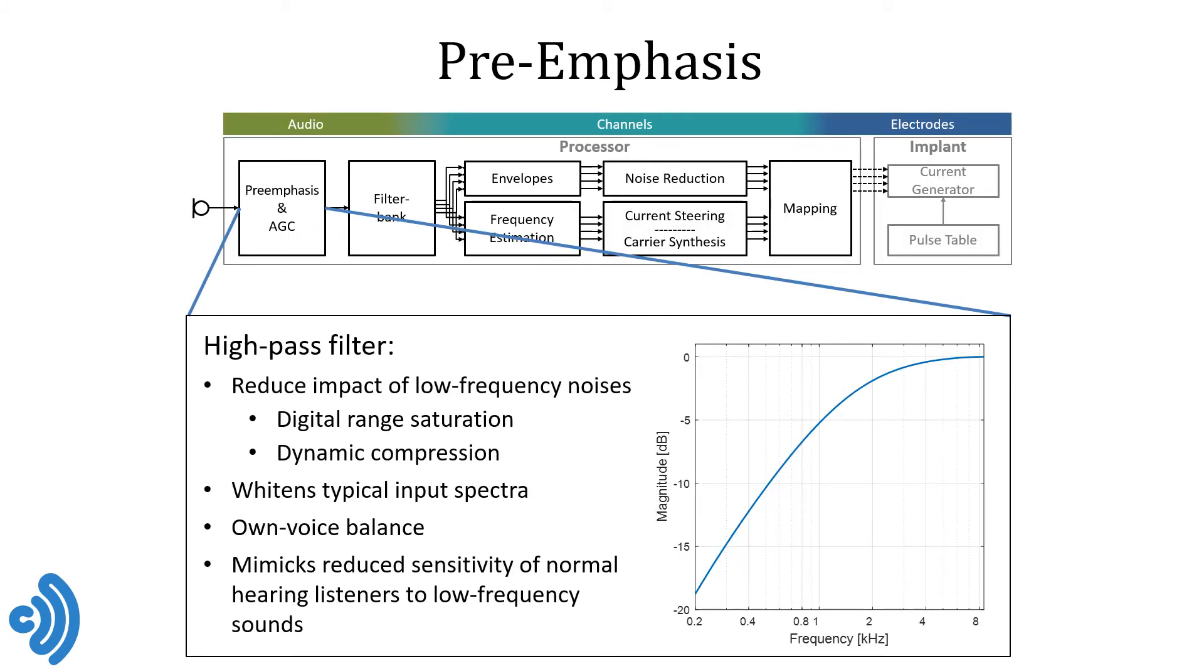The very first step in the processing chain is to simply apply a high-pass filter to the audio input, which we call pre-emphasis. The magnitude response of the filter is shown on the right and you can see that we have around 10 dB of attenuation at 500 Hz, 5 dB of attenuation at 1 kHz, 2 dB remaining at 2 kHz and so on. The purpose of this filter is to reduce the potential negative impact of low frequency sounds and environmental noise on the further processing, potentially causing saturation of the AD converters or triggering dynamic compression. It generally widens the spectra of speech and other low frequency dominated sounds and helps with balancing the perceived loudness of the CI user's own voice. Finally, it also mimics the reduced sensitivity of normal hearing listeners to low frequency sounds.